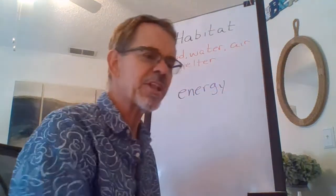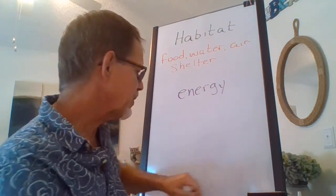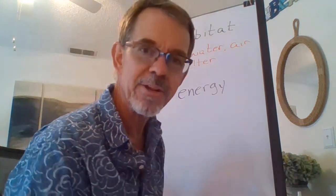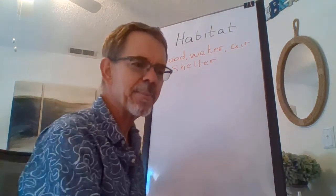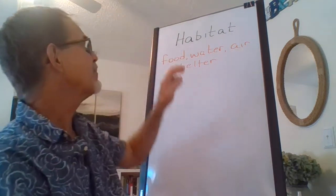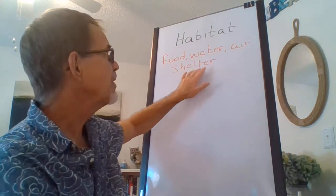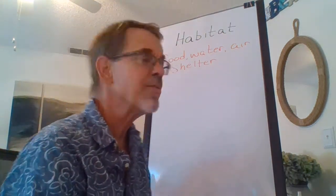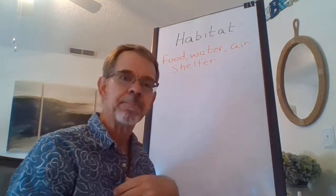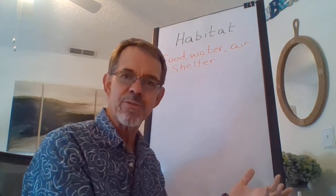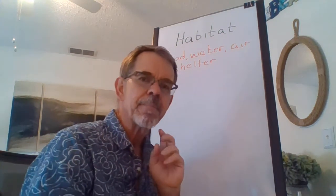Food gives us energy. Now we've been learning about habitats, right? So let's think about energy and habitats for just a minute. In a habitat, everything that an animal needs — food, water, air, and shelter — is part of that habitat. And the more food and water that's in a habitat, the more living things can be there. That's why rainforests have so many living things but deserts don't have very many.